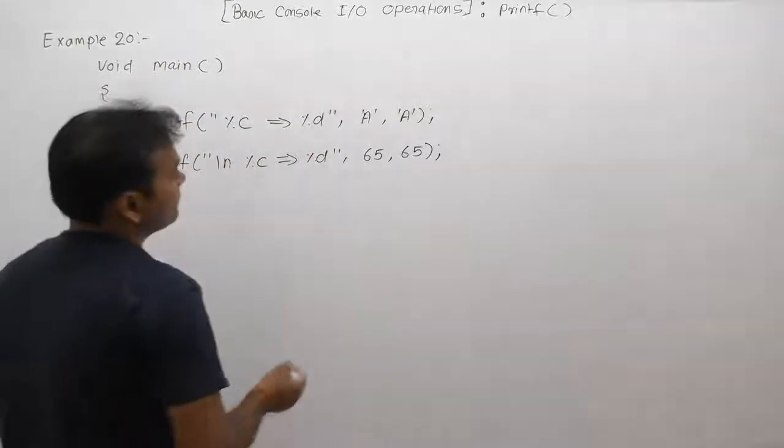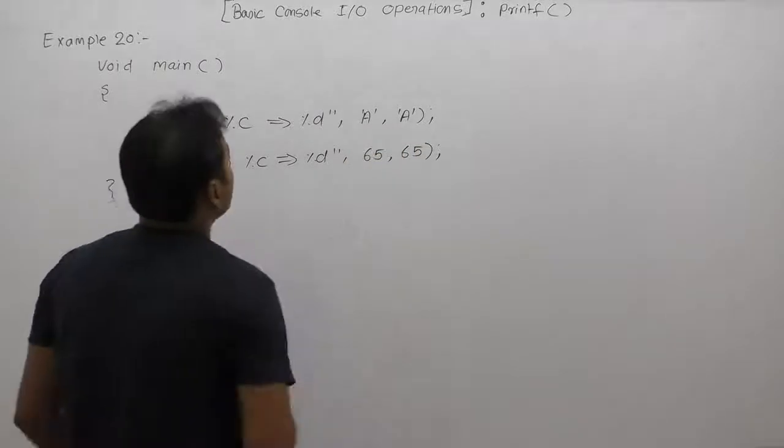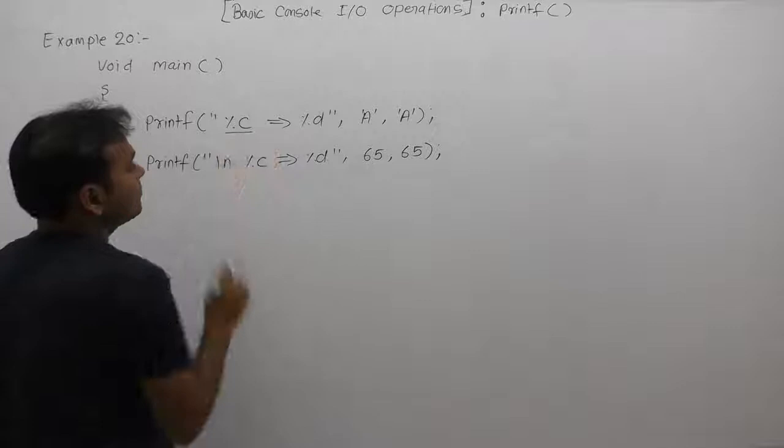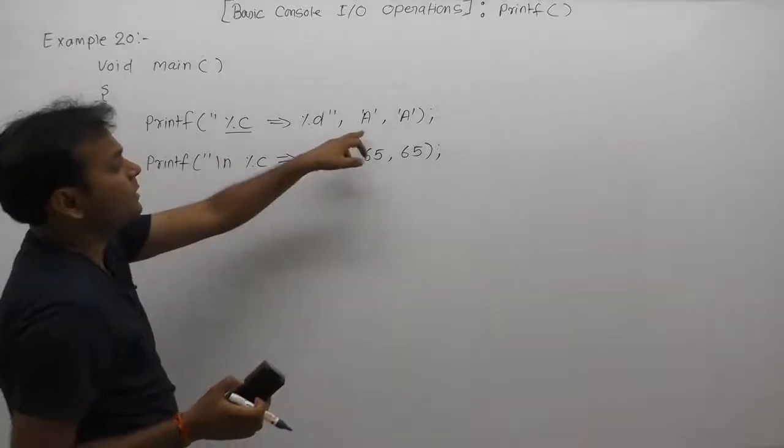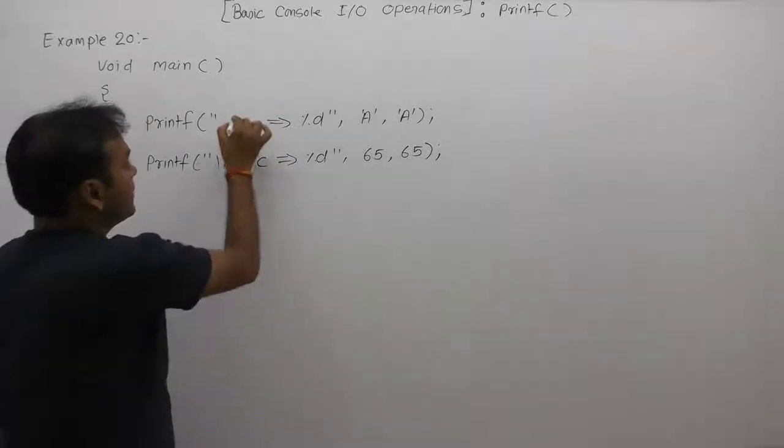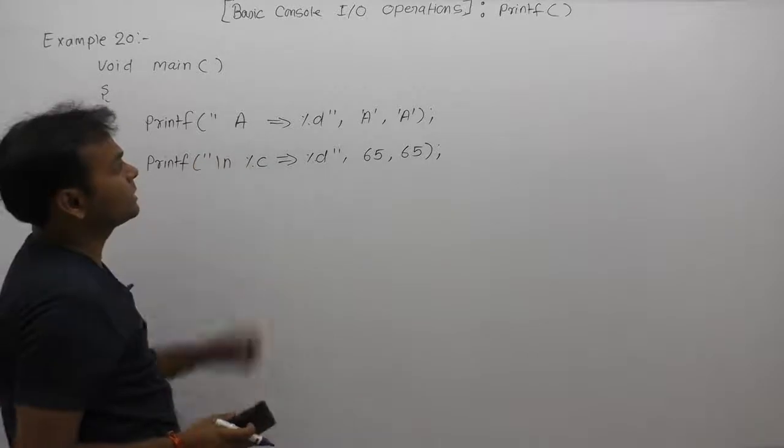In the first one, we are supplying directly character value as 'a' in place of %c. %c is replaced by the given character. The given character is 'a'. Therefore, 'a' is replaced in place of %c.